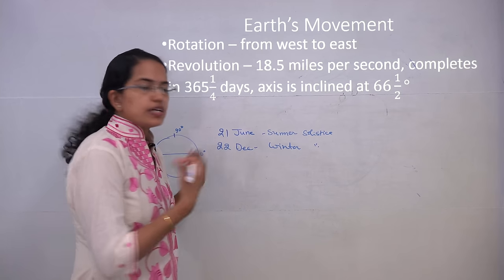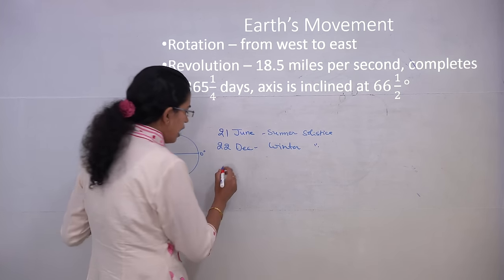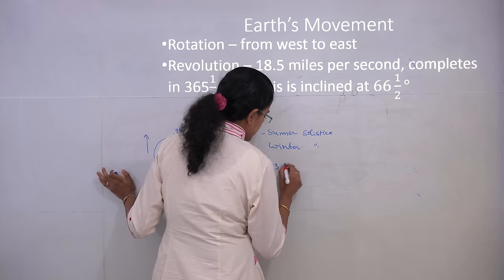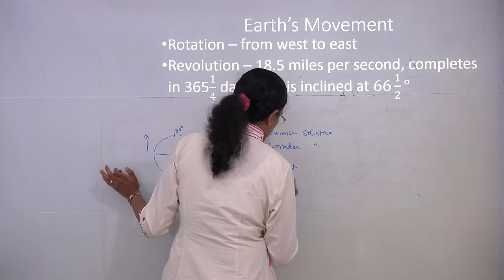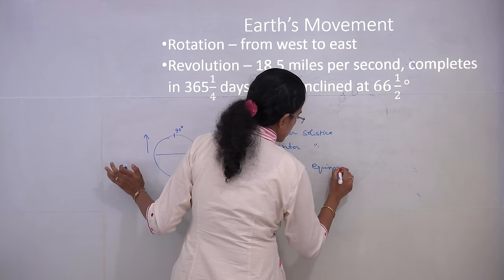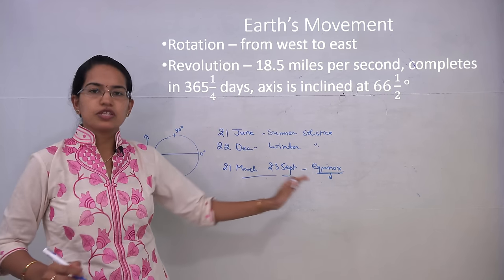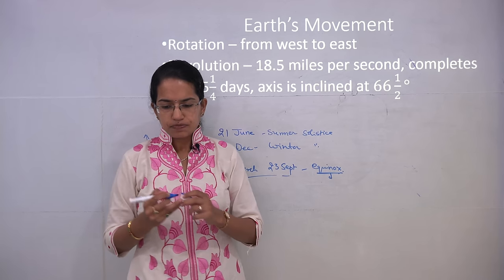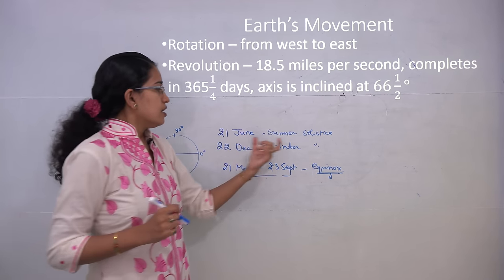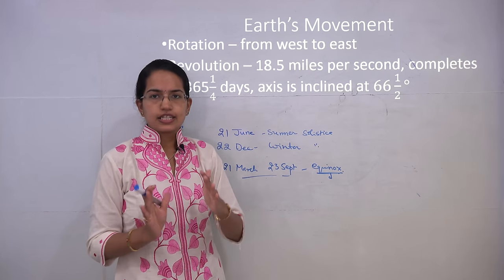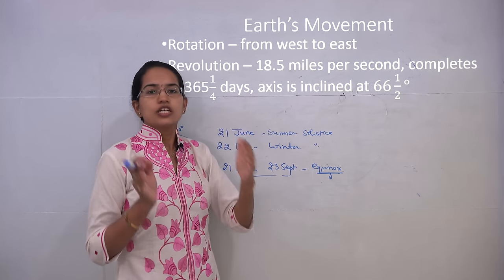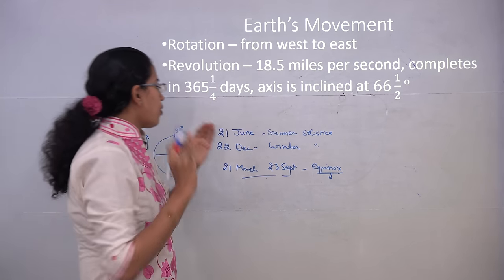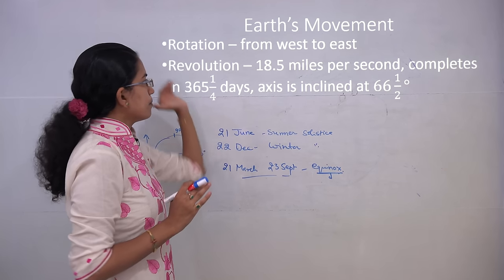The inverse happens in the Southern Hemisphere. On 21st March and 23rd September, you have the equinoxes — equal day and equal night. During summer solstice, days are longer and nights shorter; during winter solstice, days are shorter and nights longer. All these seasonal changes are governed by the revolution of the Earth.